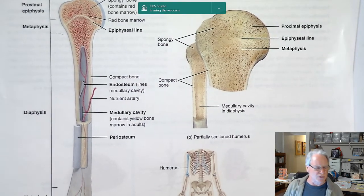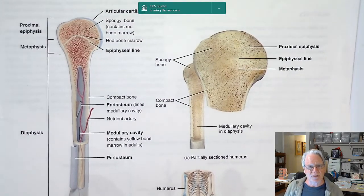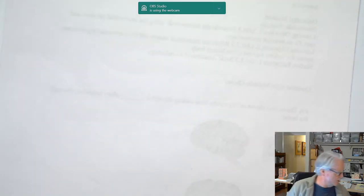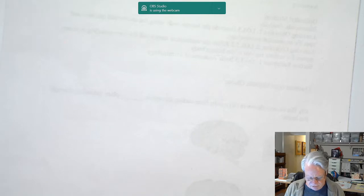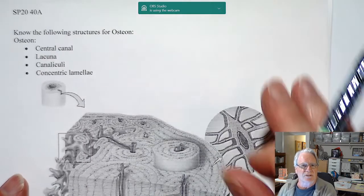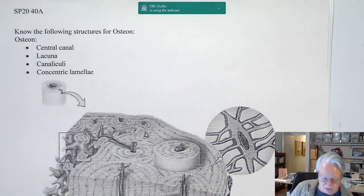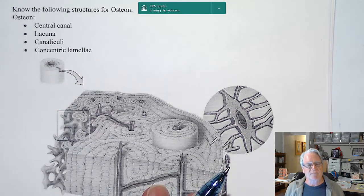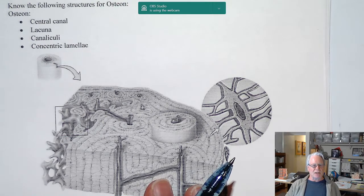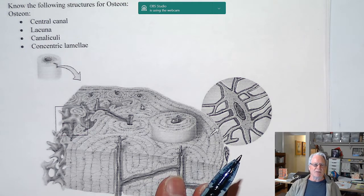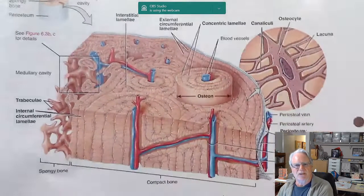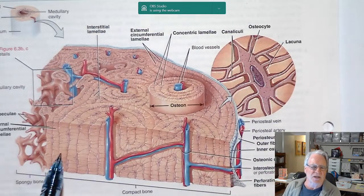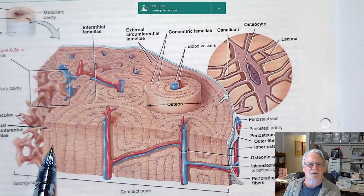We're going to cover this again in lecture because it's an important part of understanding how bones are put together and how we grow bones when needed. The next thing we're going to cover is the osteon. We'll identify different parts of the osteon. The osteon is the functional unit of compact bone.